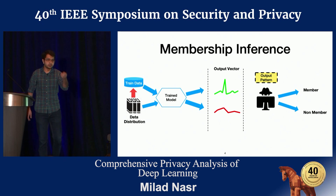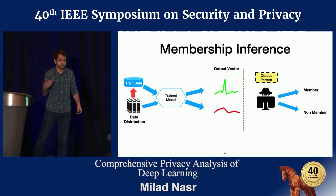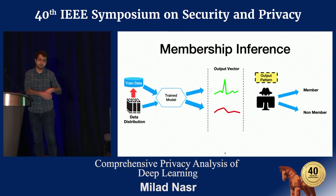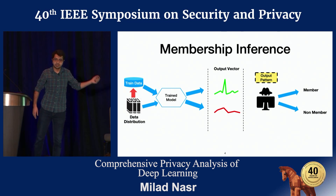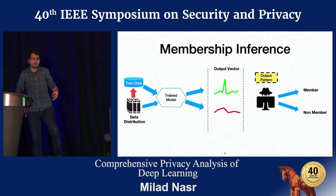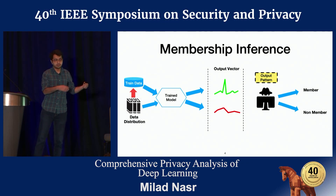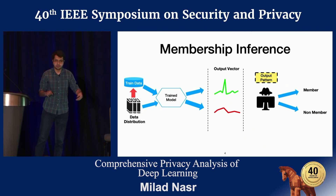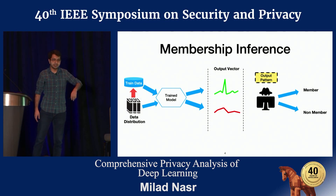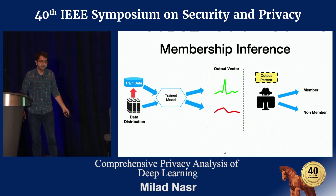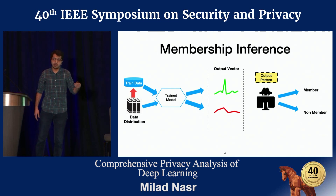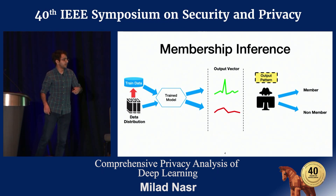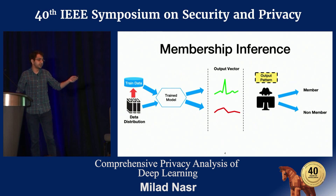You may be familiar with membership inference from previous talks. To train a deep learning model, we first have a data distribution. We pick some samples from that distribution — we call it training data — and train our model. The main observation that allows membership inference attacks is that deep learning models behave differently for samples of the training data compared to samples from just the data distribution. This allows an attacker to identify if a specific instance was used in training or not. We call a sample that was part of training a member sample, and if it wasn't part of training, it's a non-member sample.